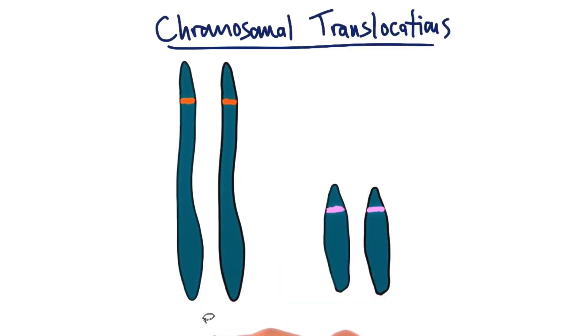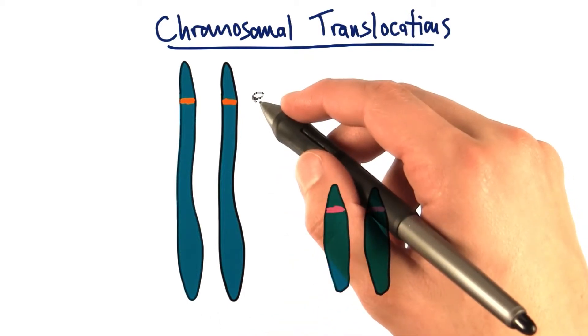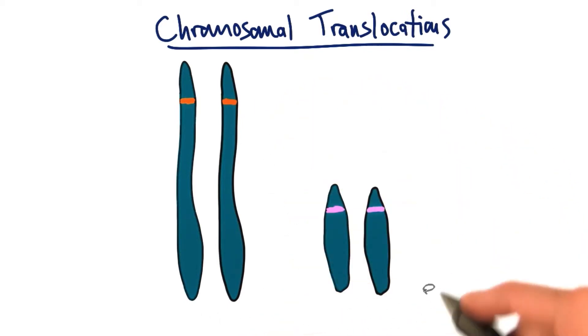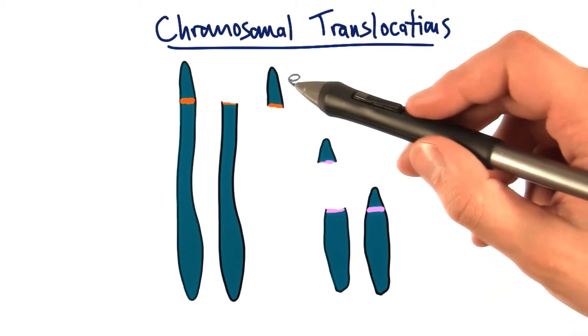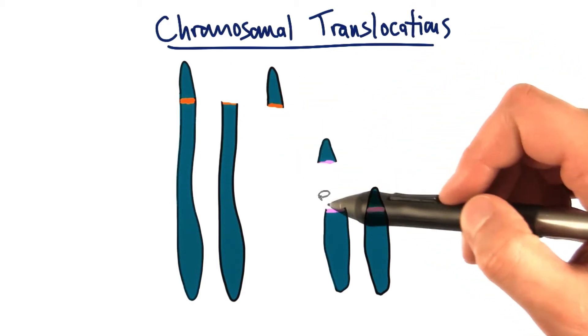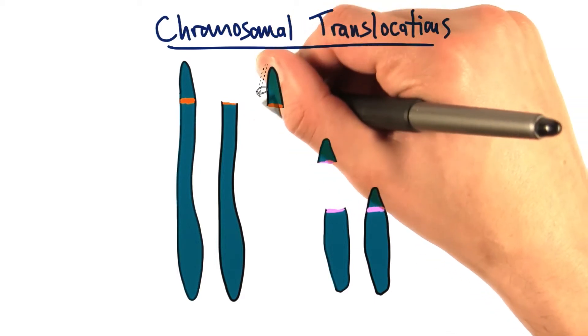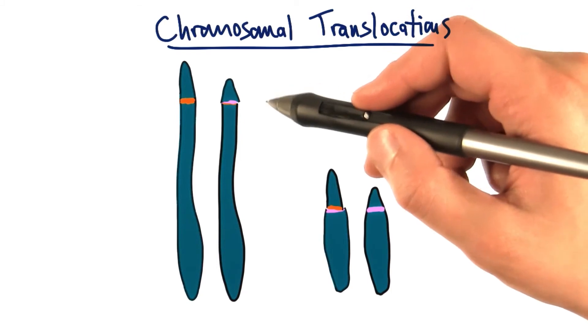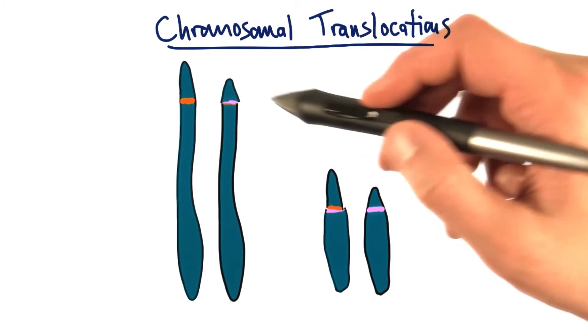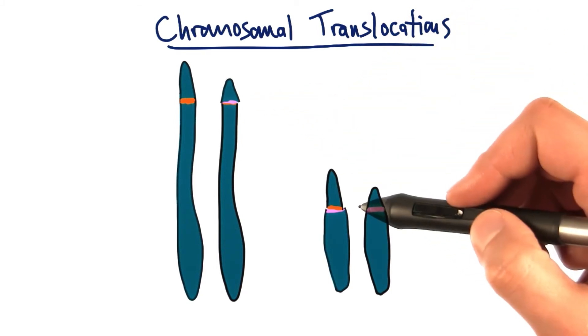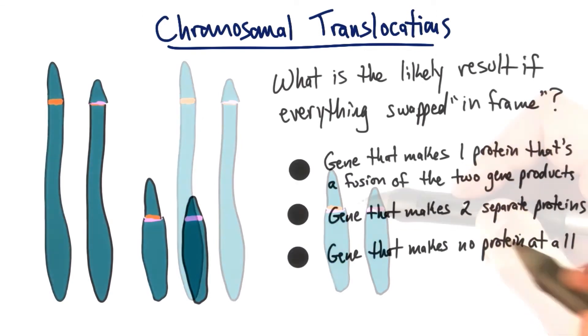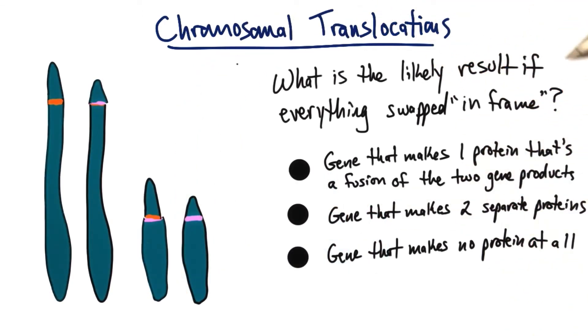Let's take this chromosome pair where there's one gene in orange at the end, and then another chromosome pair where there's this gene in pink at the end. Now let's say there's a chromosome break in each chromosome, and it happens right in the middle of the two respective genes, and just by sheer random chance. Now let's say these chromosome pieces swap so that the genes landed exactly in frame with each other's coding region. What do you think the most likely result will be?